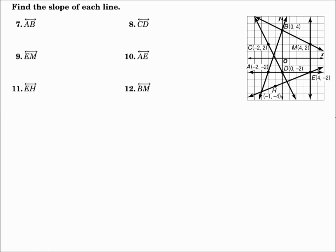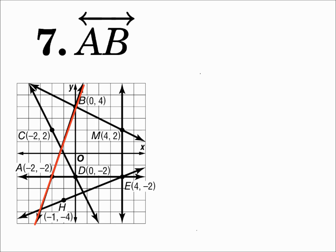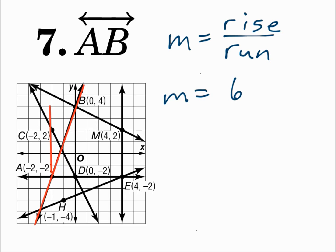Find the slope of each line. Number 7, line AB. When the line is drawn for you in a picture, it's sometimes fastest to use this version of the slope formula: m equals rise over run. Rise is the distance up or down, and run is the distance left or right. Pick two points on the line and calculate how much of a rise it was over how much of a run it was. For line AB, I can use points A and B. The rise from A to B is up 6, and the run is over 2. So rise over run is 6 over 2, which is 3.